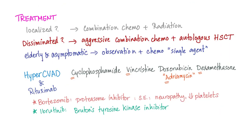For treatment: if mantle cell lymphoma is localized, use combination chemotherapy plus radiation. If disseminated, never use radiation — use aggressive combination chemo plus autologous hematopoietic stem cell transplant if the patient is young. For elderly and asymptomatic patients, use observation and single-agent chemotherapy.